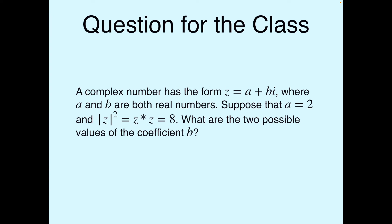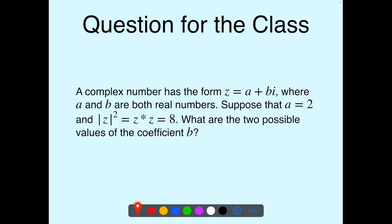Here's an example for you to try at home. A complex number has the form z equals a plus bi, where a and b are both real numbers. Suppose a equals 2, and the magnitude of z squared, which is z star times z, equals 8. Based on that, what are the two possible values of the coefficient b? Try to work it out, pause the video, see if you can get it, and then we'll go through it together.